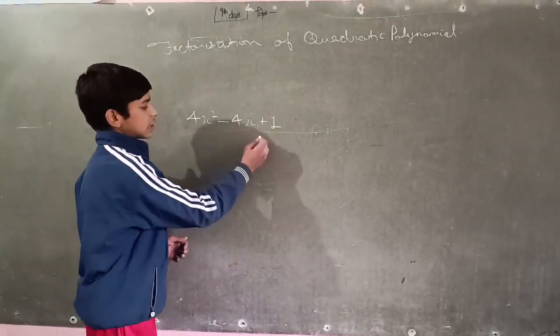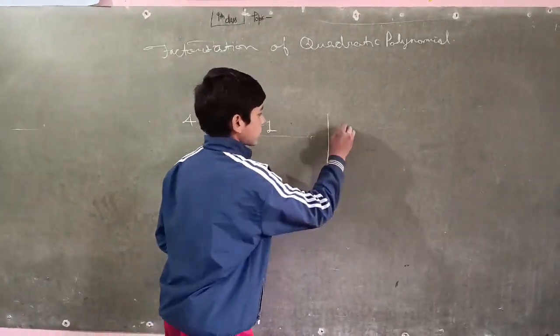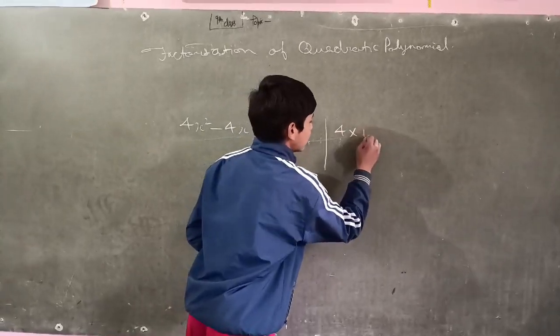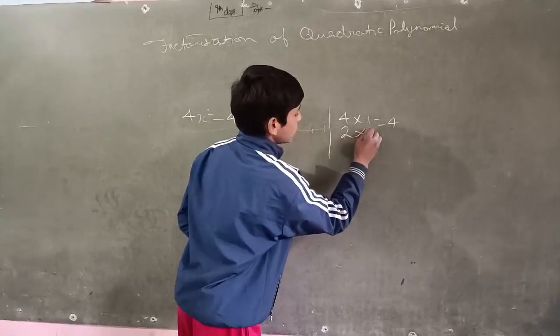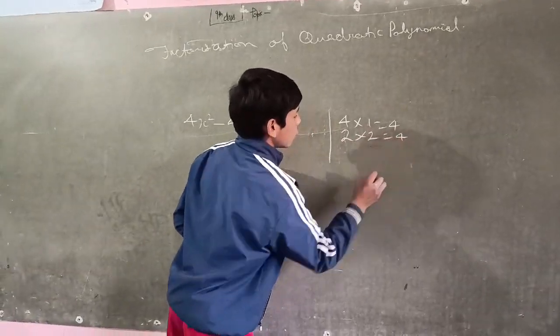Now we will split the middle term. 4 into 1 is equal to 4 and 2 into 2 is equal to 4.